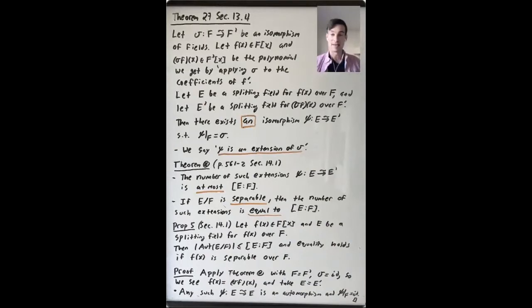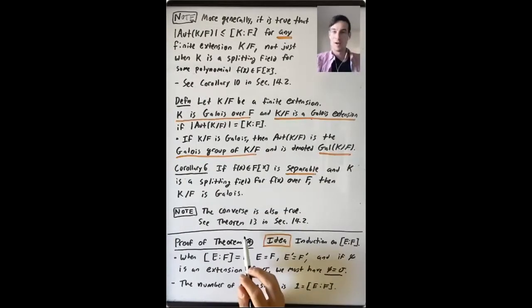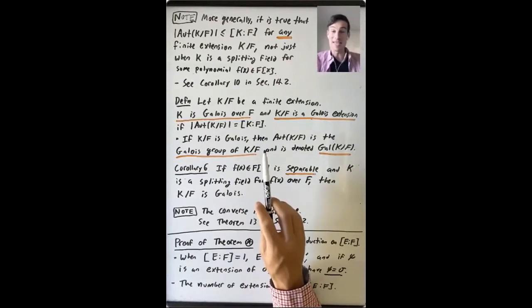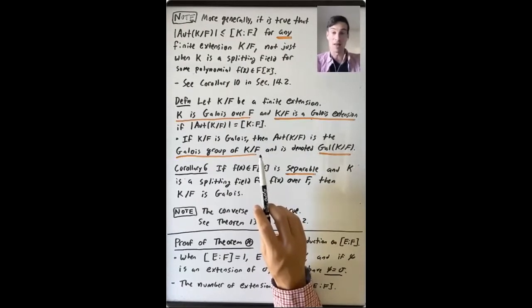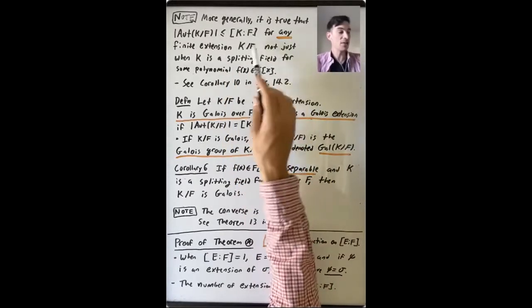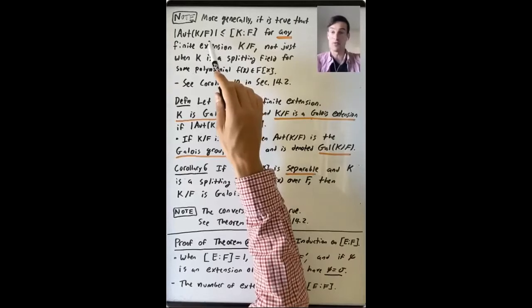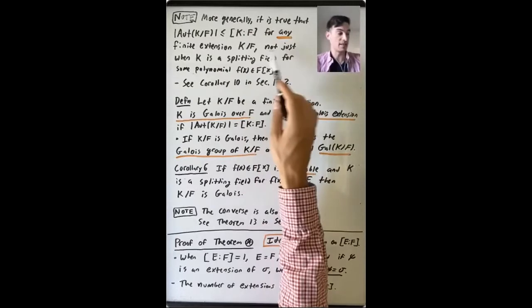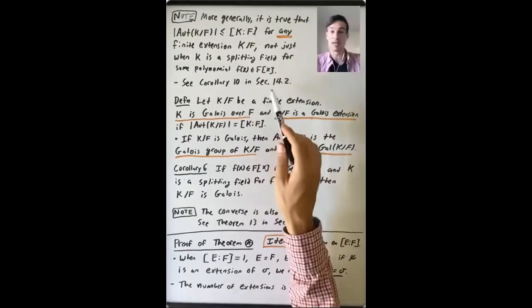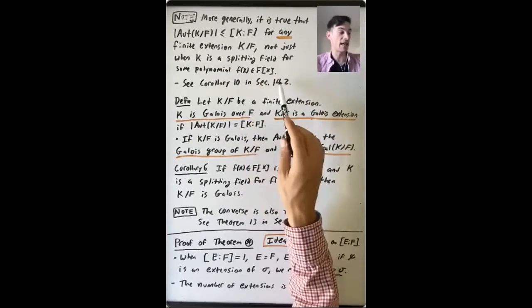Once we prove Theorem Star, we'll know that the order of the group of automorphisms of E fixing F is at most [E:F]. More generally, it is true that for any finite extension K over F, the size of the group of automorphisms of K fixing F is at most the degree of this extension — not only when K is a splitting field. This is Corollary 10 in Section 14.2.